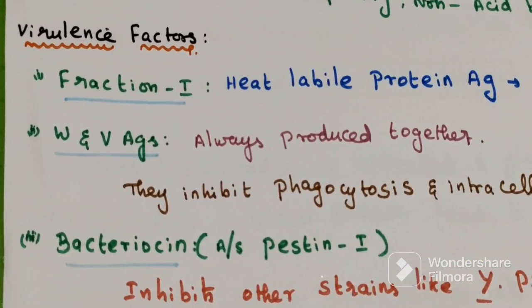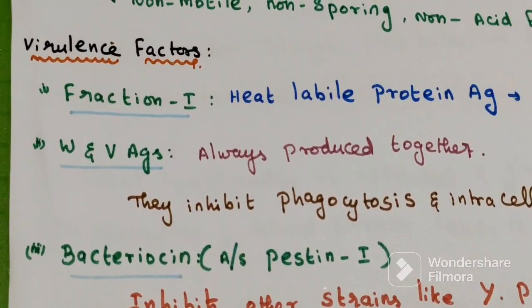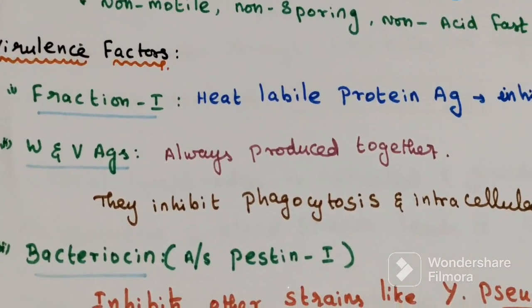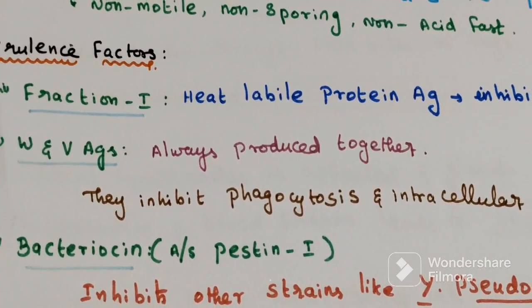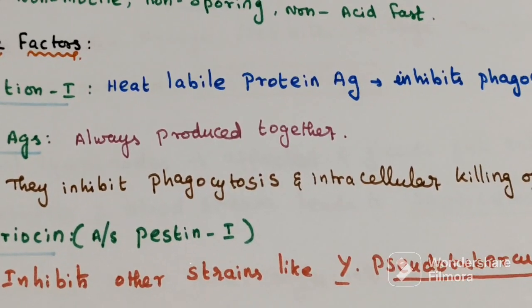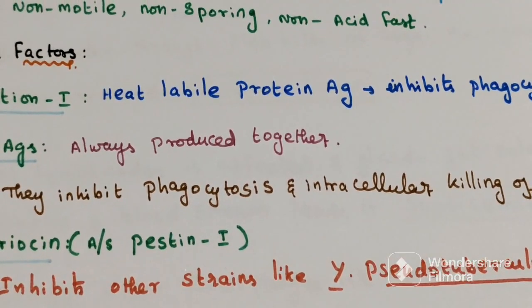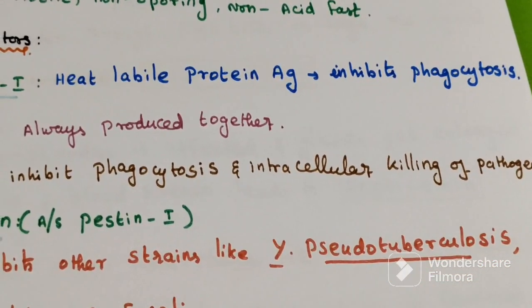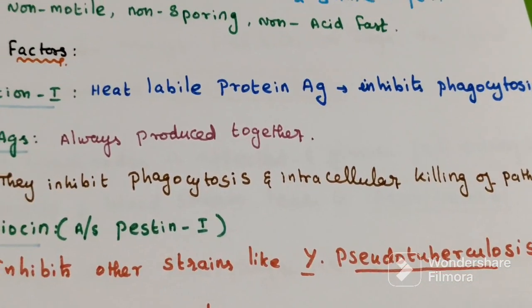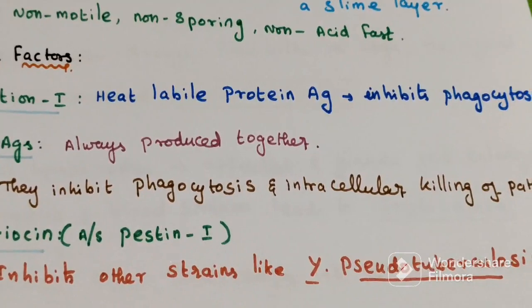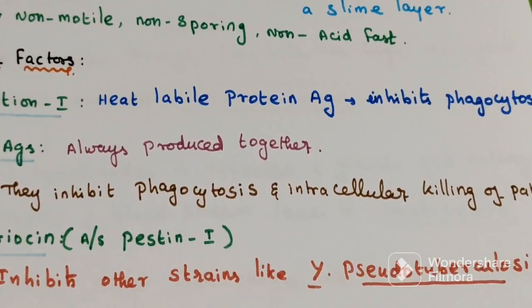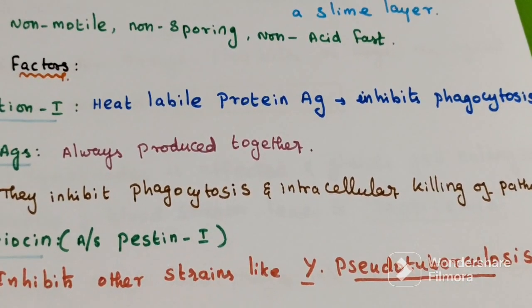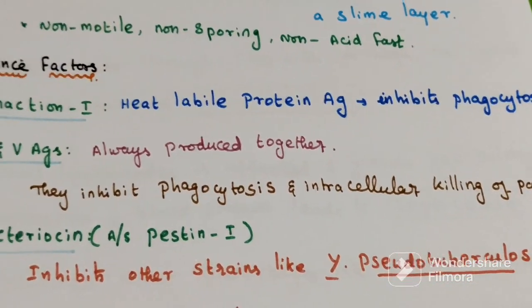Virulence factors. First is Fraction I — it is a heat-labile protein antigen which inhibits phagocytosis.